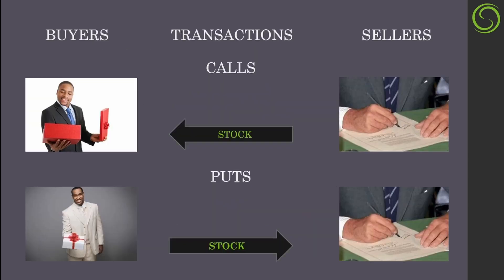Looking at this image, on the left side we have the buyers of the contract, and on the right side are the sellers. The top section covers people interacting with calls, and the bottom covers puts. The buyers can call away the stock from the sellers, and the buyers of put options can put shares to the sellers. For calls, the stock goes to the buyers if they choose to use the contract. For puts, the stock goes to the sellers if buyers choose to use the contract.